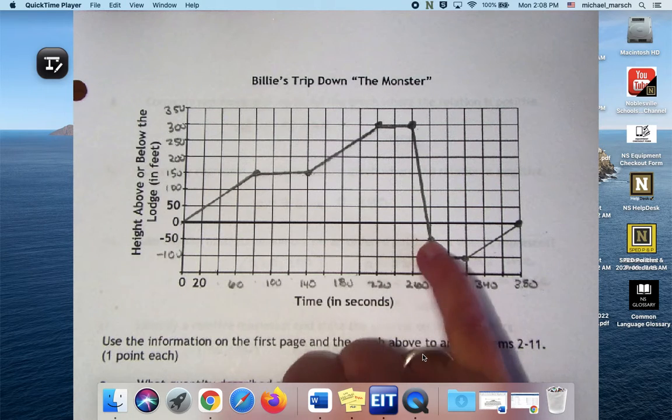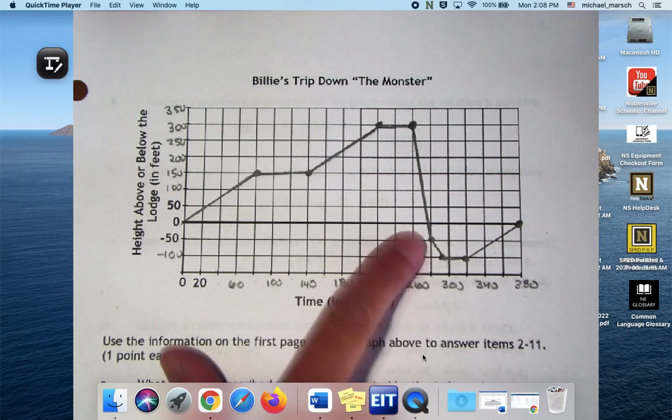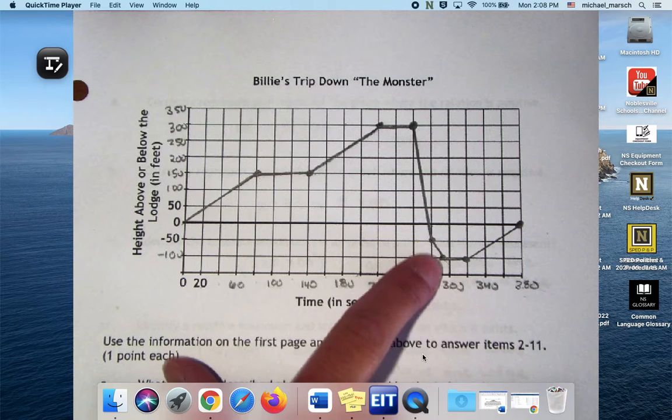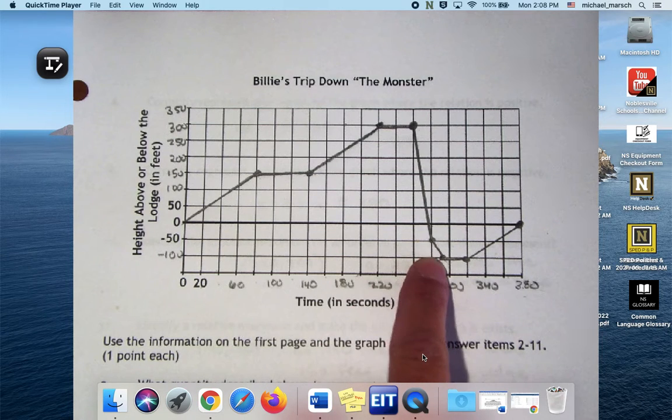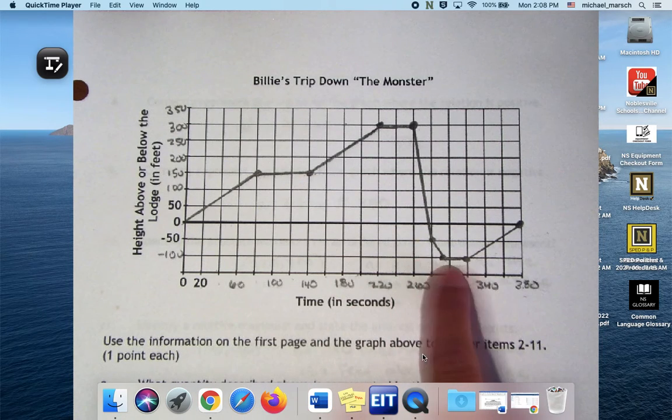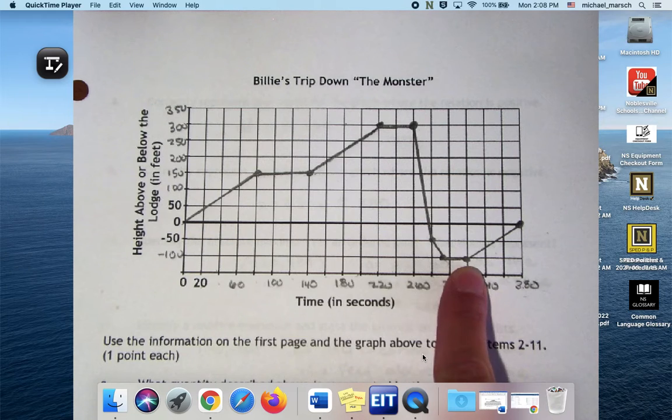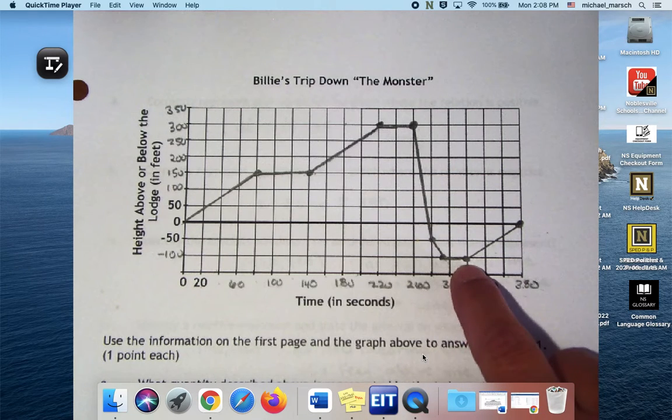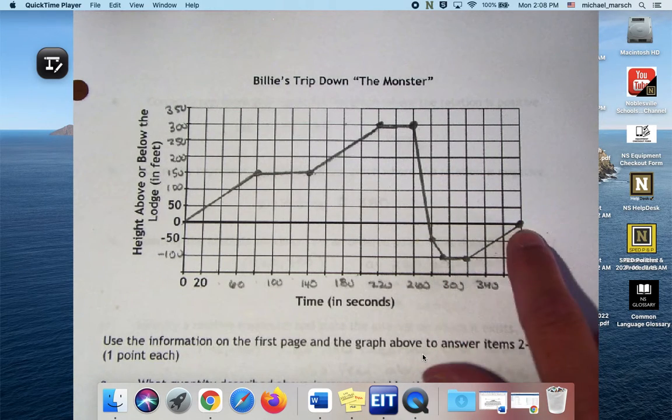Then it took her 10 seconds to ski down 100 feet to get to the next lift. She waited 30 seconds before she could grab a seat. It took 60 seconds to get back up to the lodge on the ski lift.